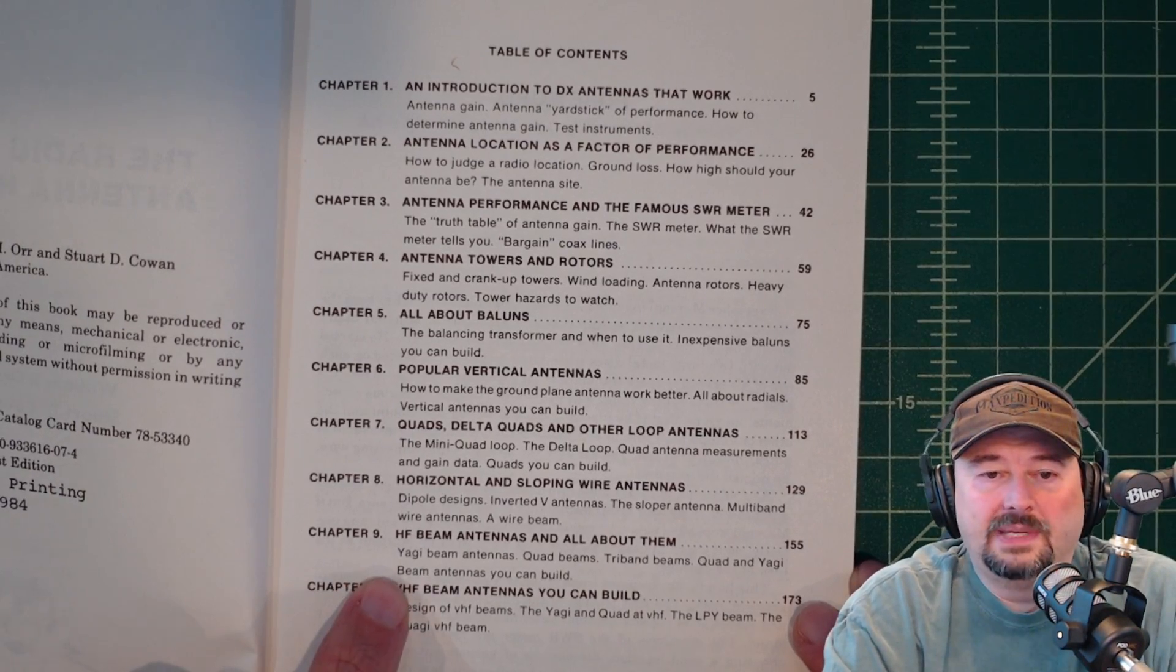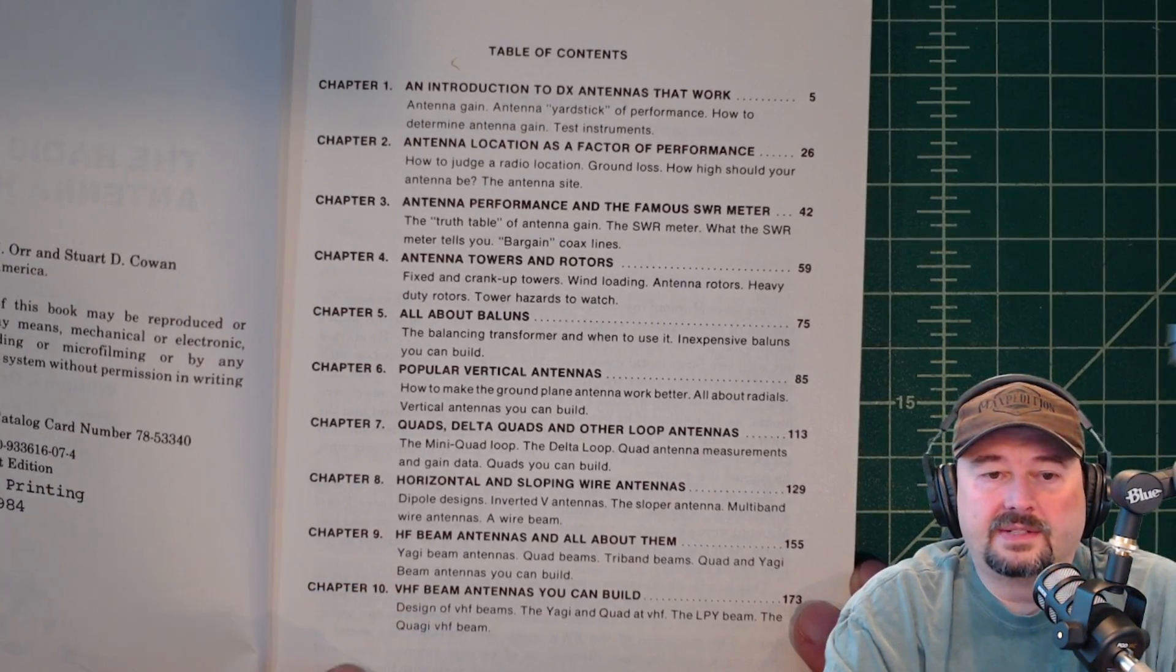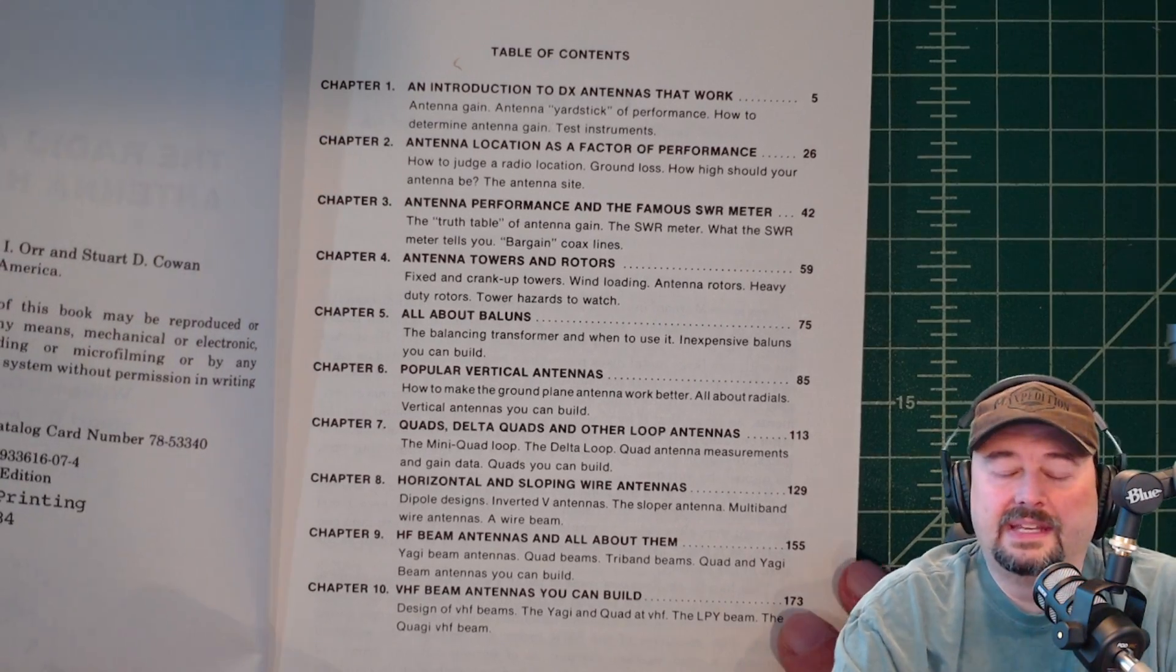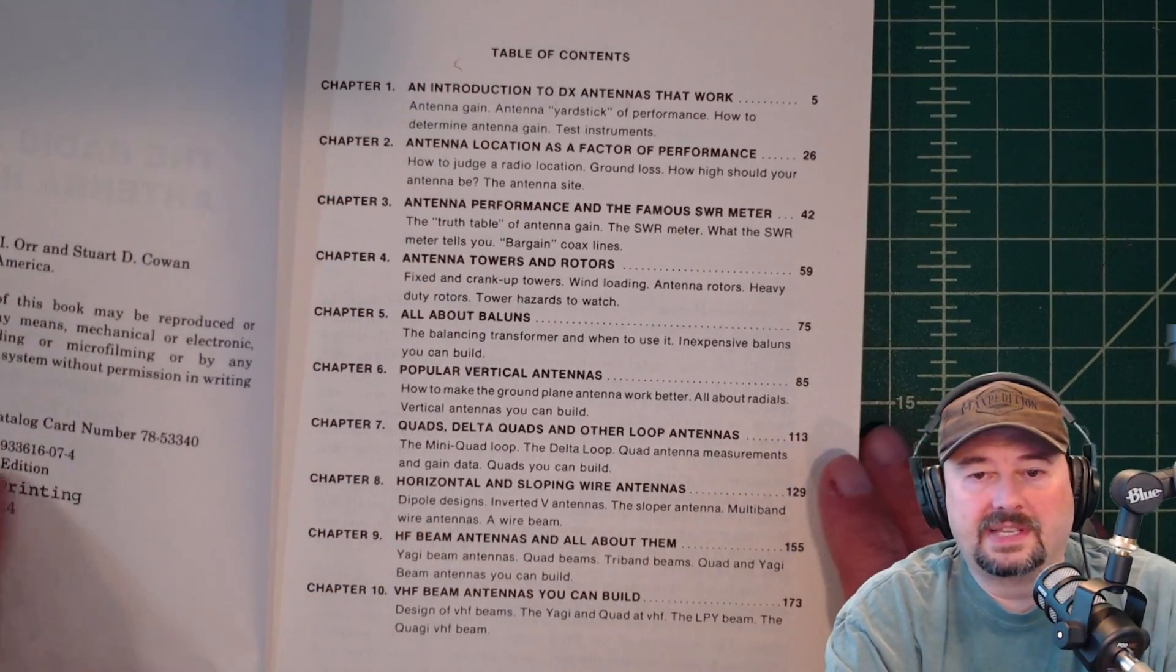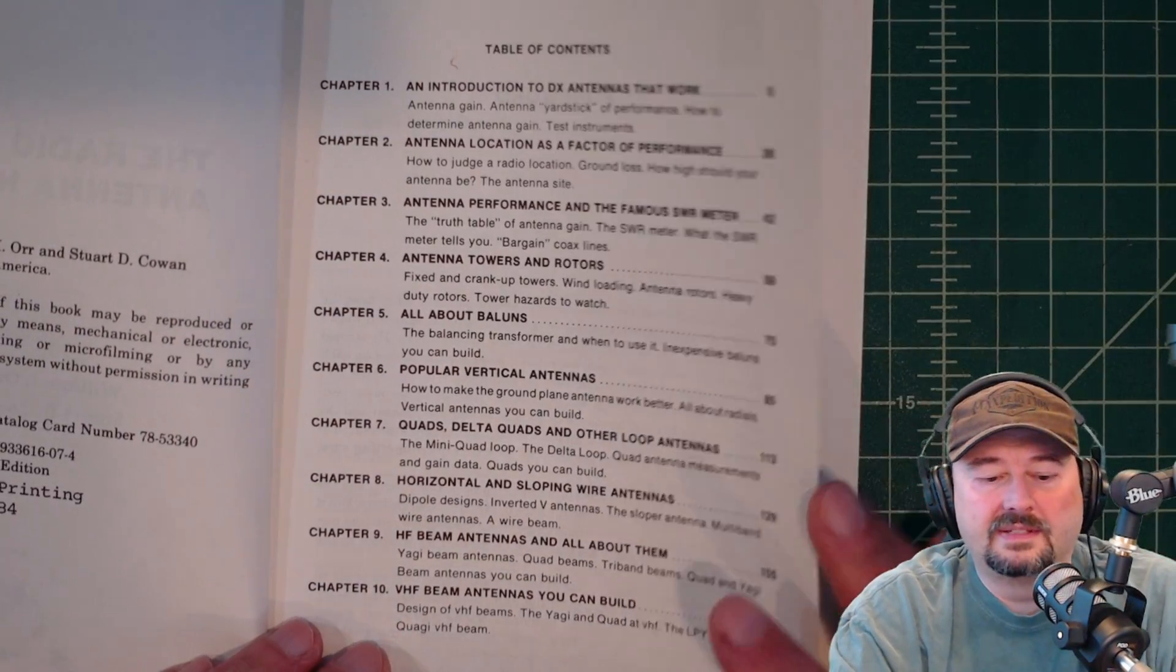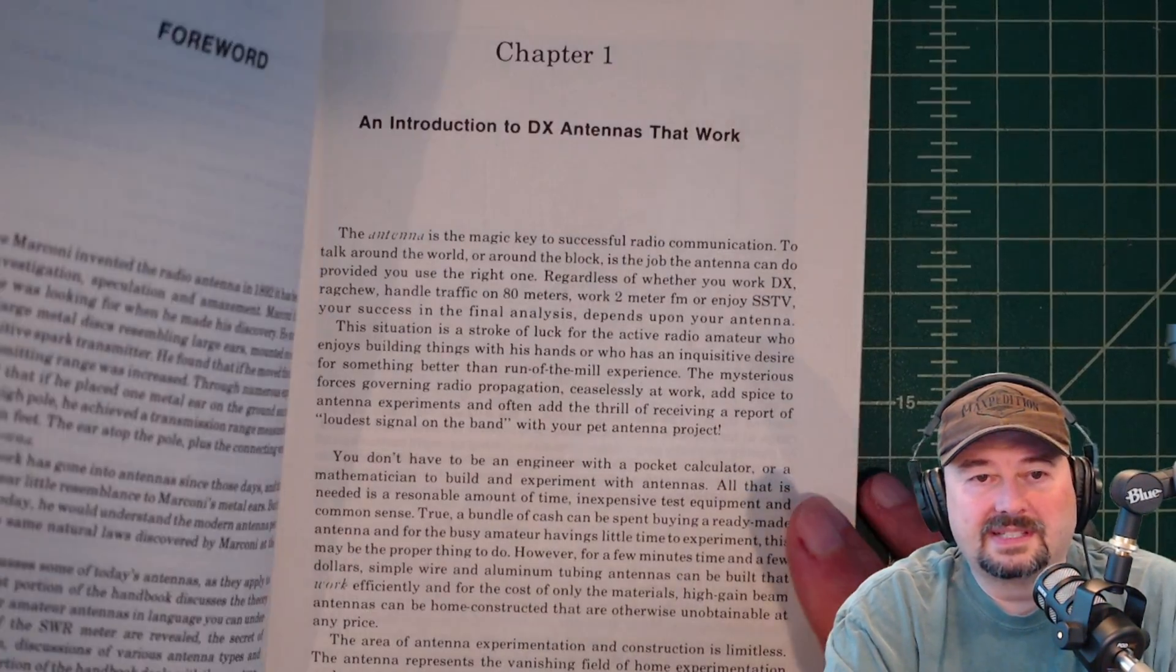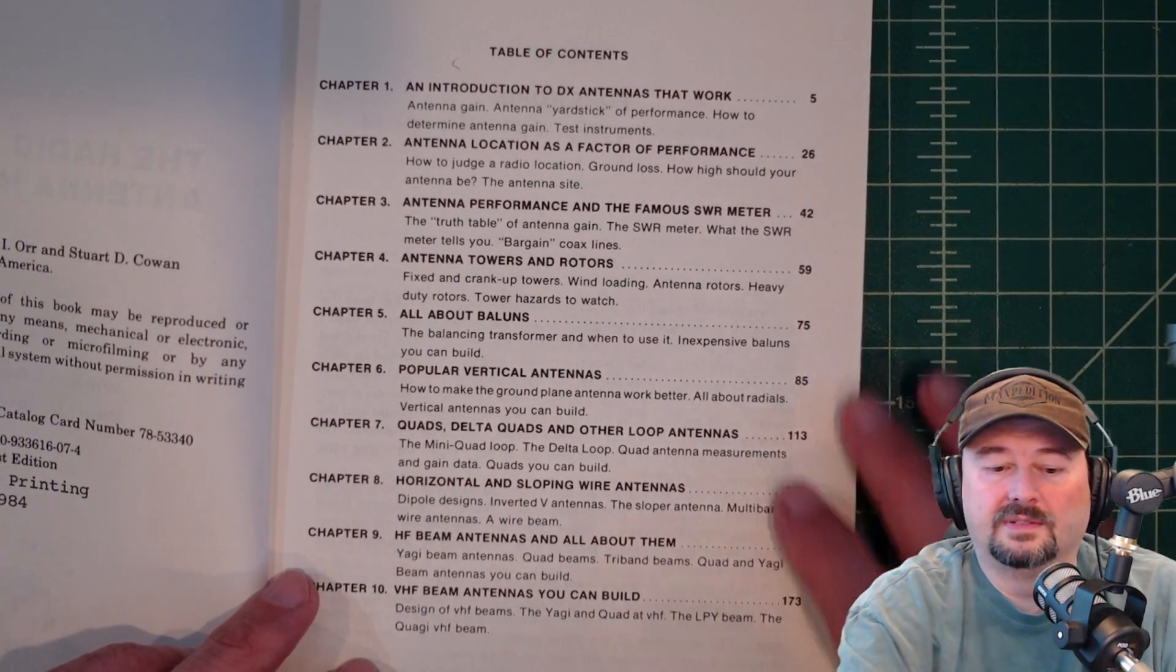Talks about HF beam antennas and all about them, and then talks about some VHF beam antennas, and there are some plans in here for how to build those. So it's a pretty comprehensive book. It's about 150 pages. The print's a little small because it's a little bit of a small book, but don't let that discourage you.